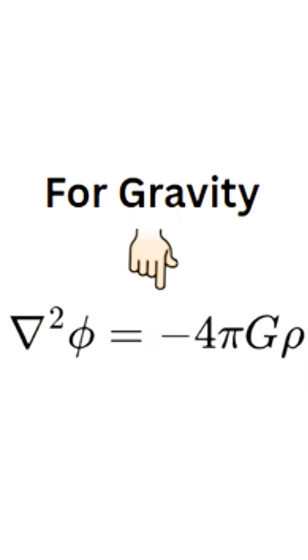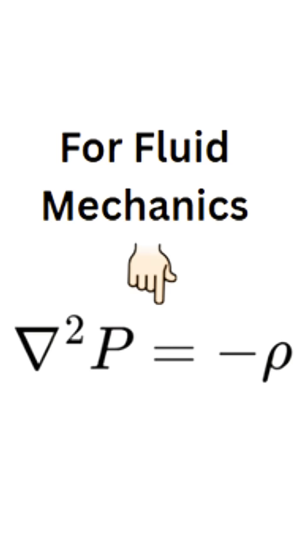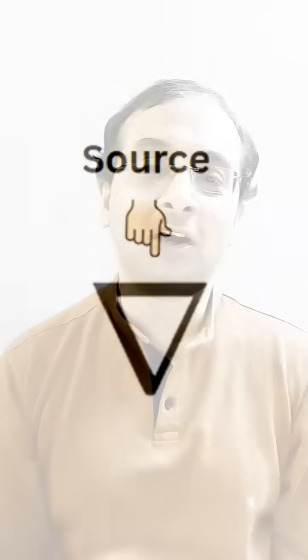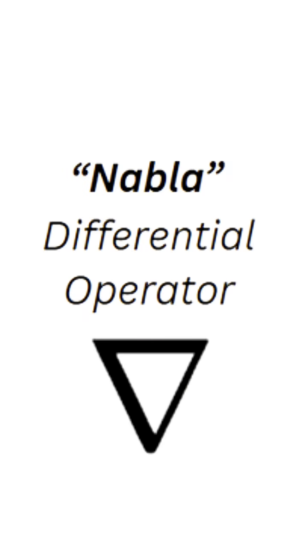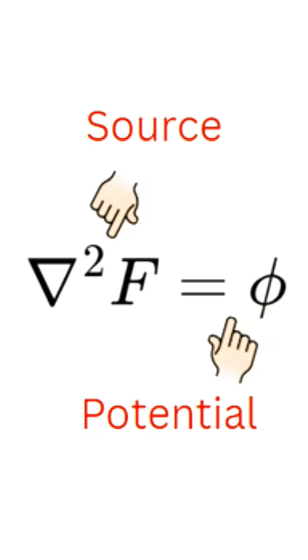The Poisson equation actually comes in different forms — something which looks like this, and something which looks like this — but overall you can see there is an inverted triangle, which is called the nabla. It is a differential operator that measures the source. But notice it has a nabla squared — so what is that? Is it nabla dot nabla? We'll talk about that later.